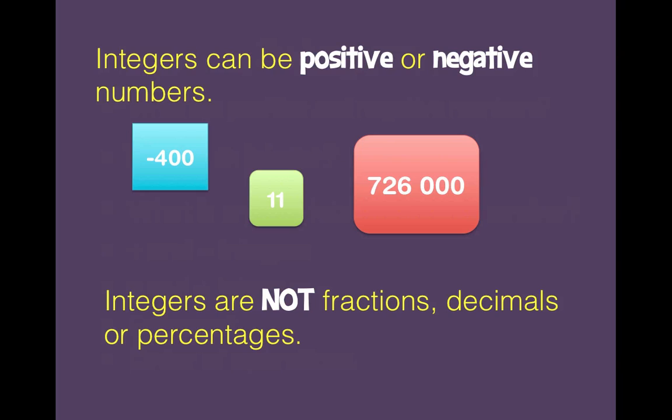Integers can be positive or negative numbers. So like you have examples here: negative 400, positive 11, positive 726,000, and we could go on. An infinite number of examples for integers.